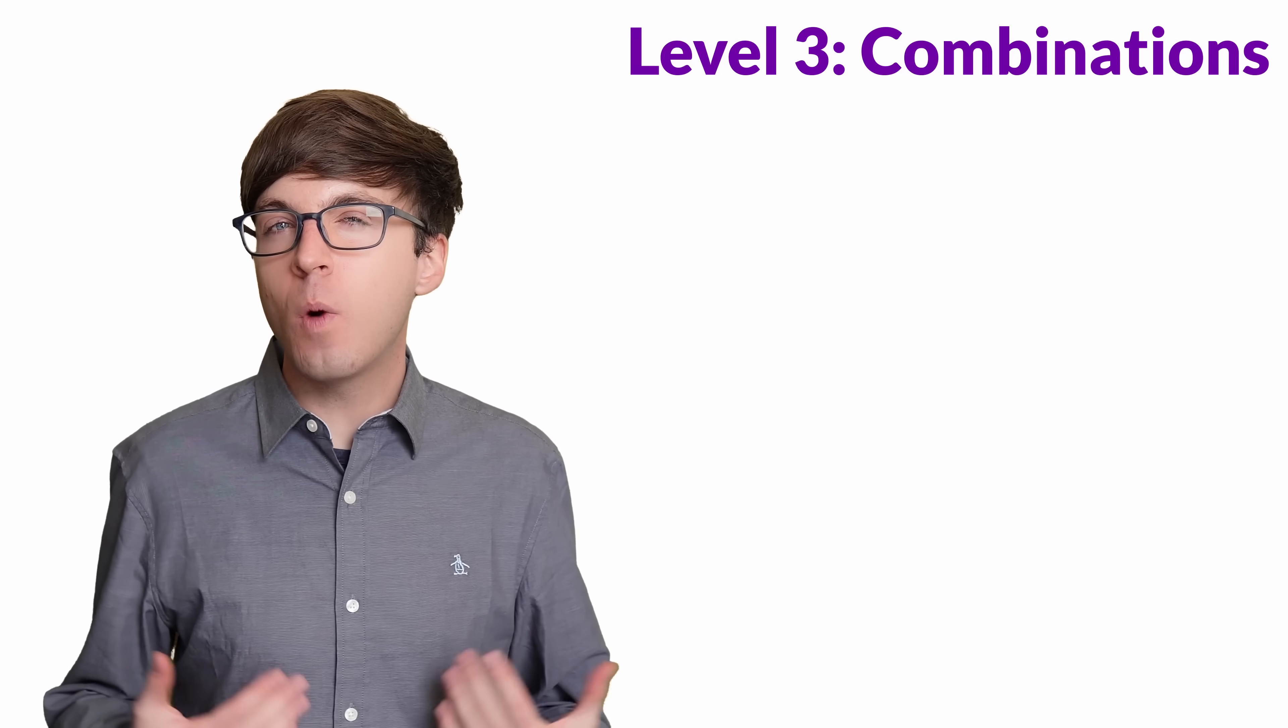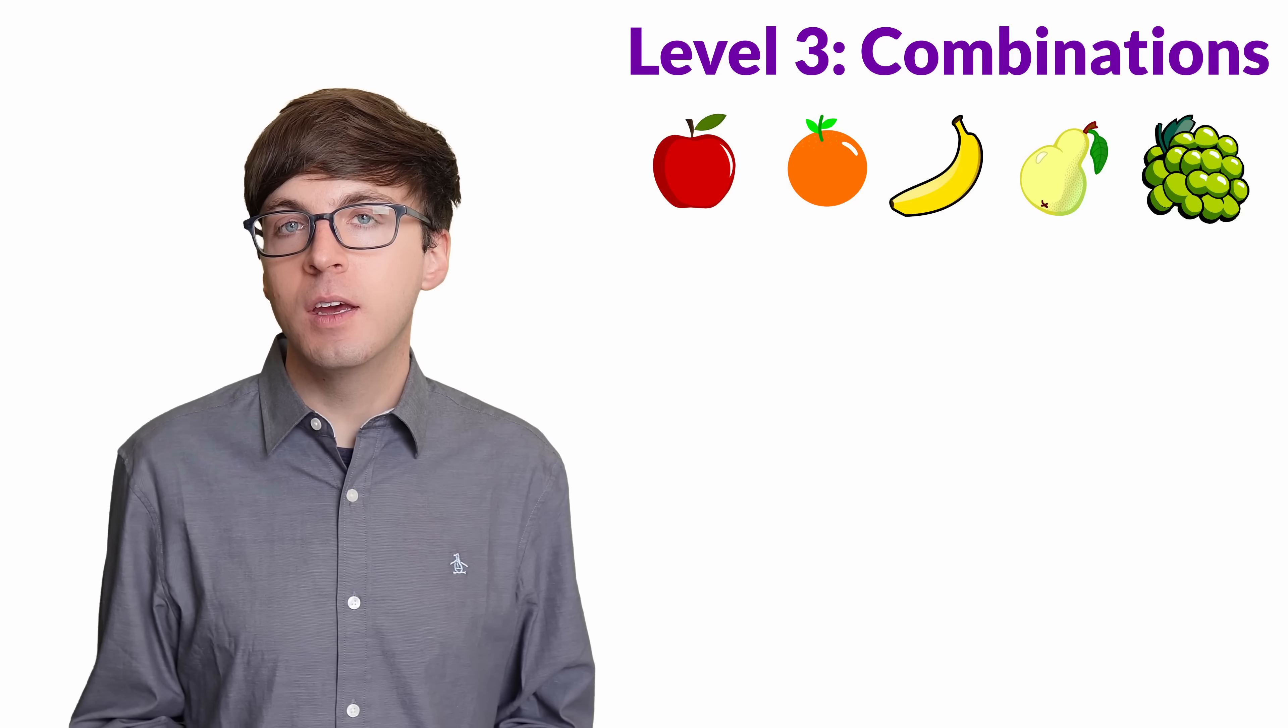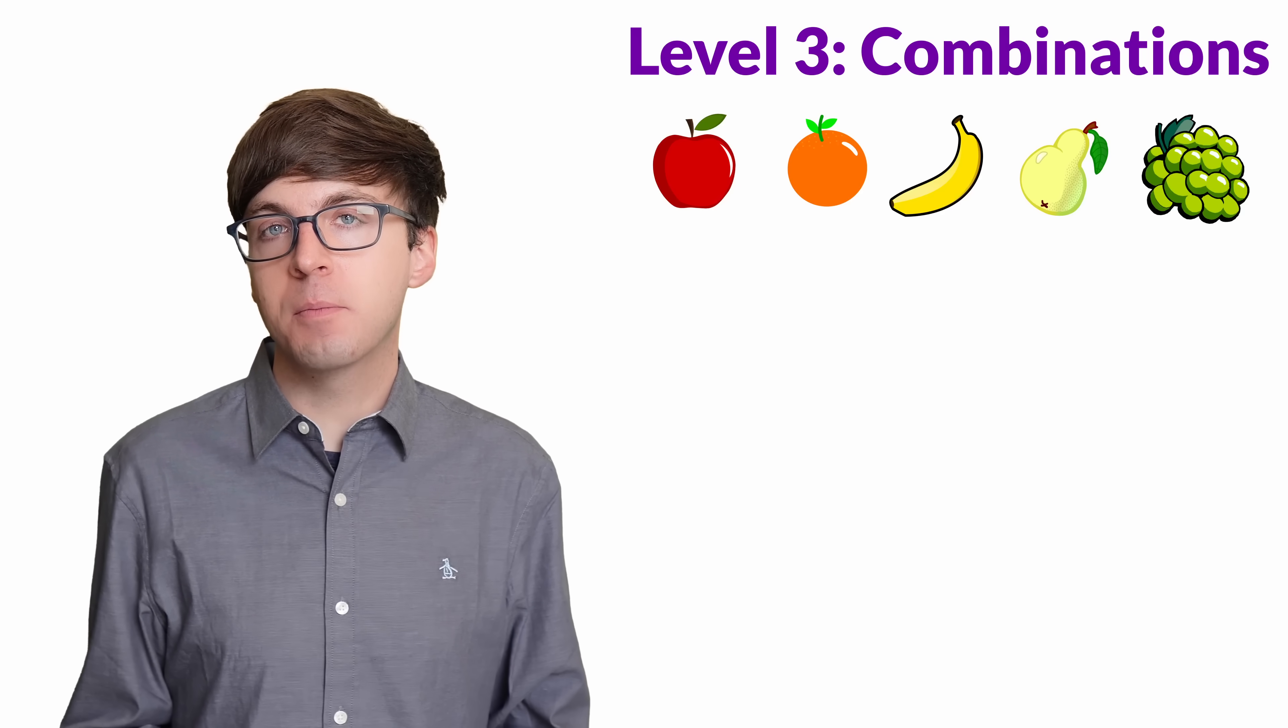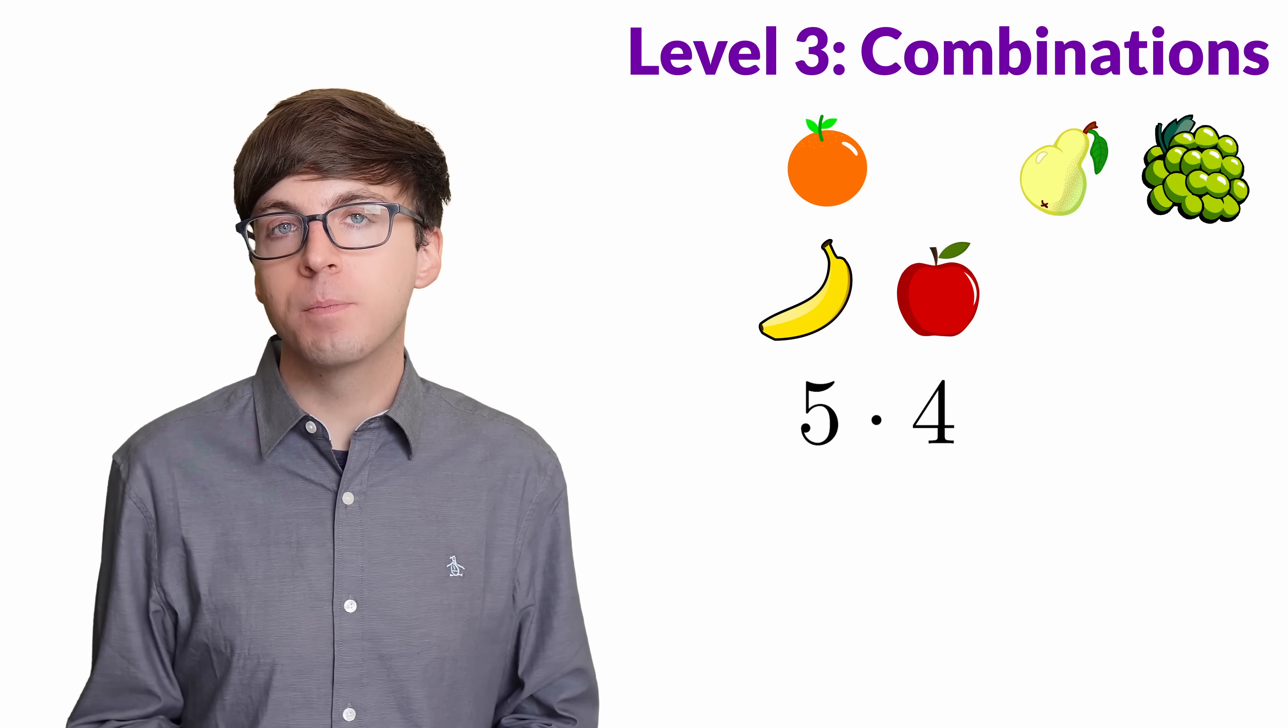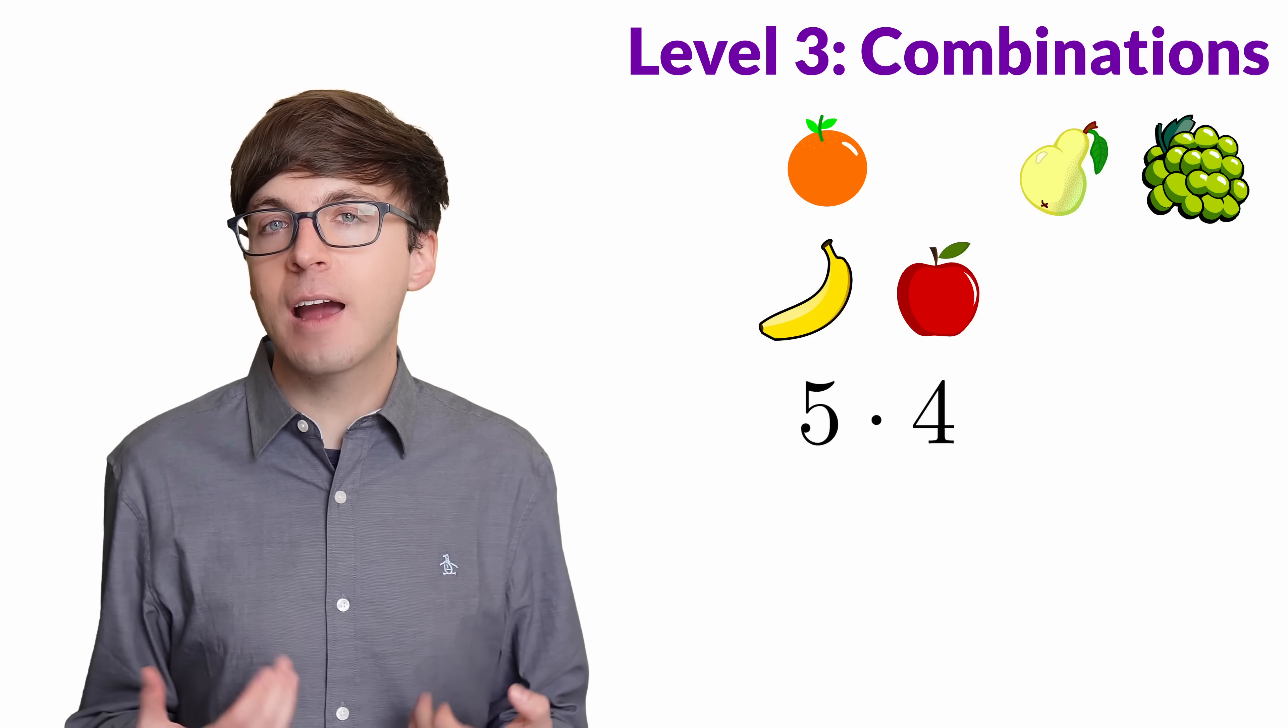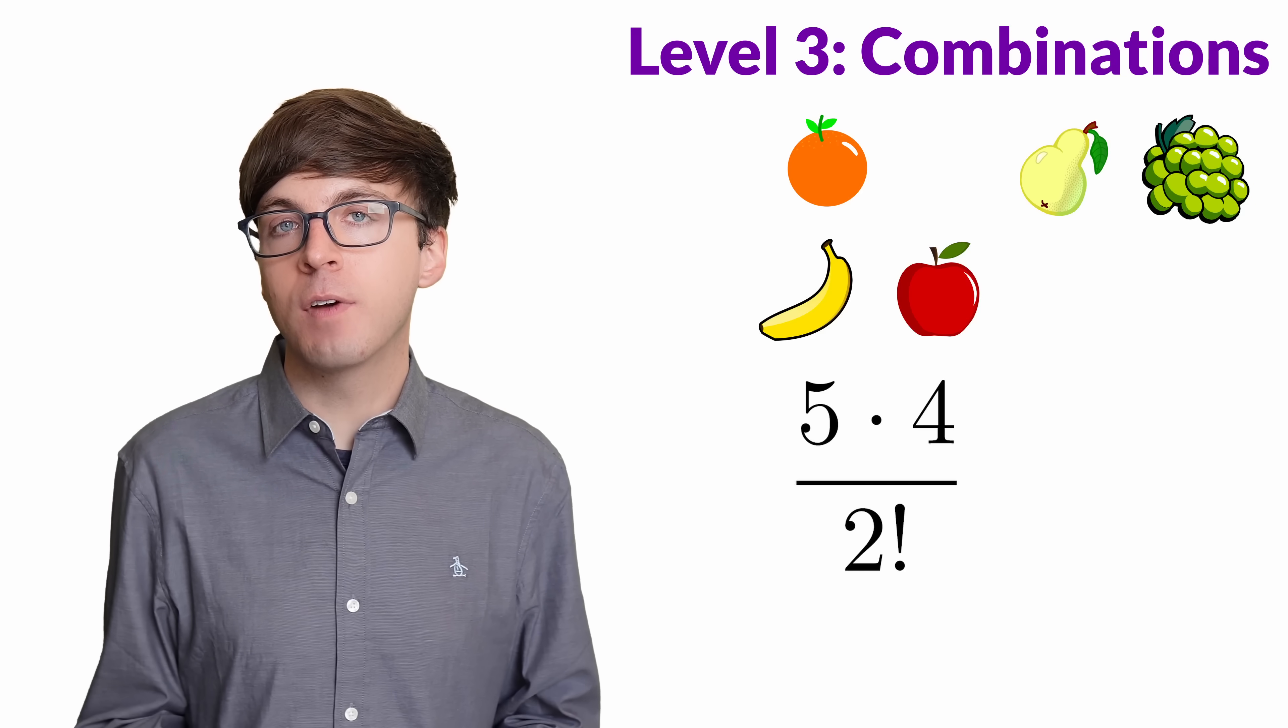For level 3, let's talk about why we would even need 0 factorial in the first place. Let's say we have 5 distinct objects, and we want to choose 2 of them to take with us. The order doesn't matter, only which 2 we decide to take. There are 5 choices for the first object we pick, and then 4 choices for the second. That's 5 times 4. But since we said that the order of the objects doesn't matter, we've actually overcounted by a factor of 2 factorial. So we get 5 times 4 divided by 2 factorial.